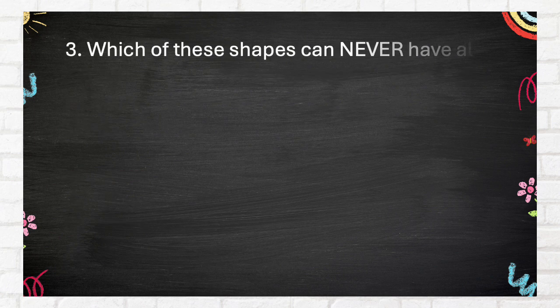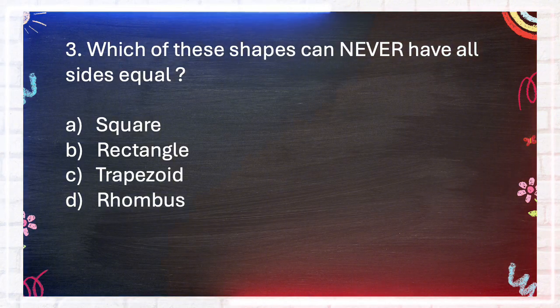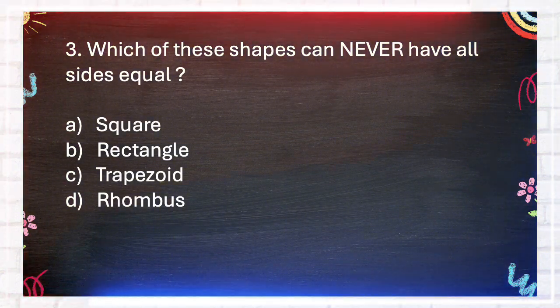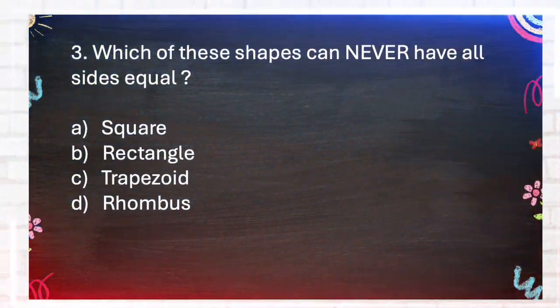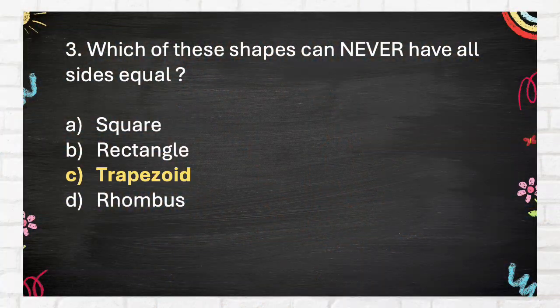Number 3. Which of these shapes can never have all sides equal? A. Square. B. Rectangle. C. Trapezoid. D. Rhombus. The correct answer is C, Trapezoid.